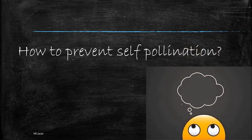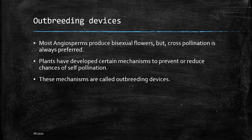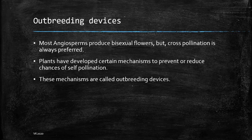Even though we have so many agents of pollination, we still have homogamy — autogamy wherein the plant is pollinating itself. But plants don't really prefer homogamy or autogamy; they need variation to increase their genetic diversity. So plants have developed certain devices known as outbreeding devices, by which they can prevent themselves from being fertilized by their own pollen. Because most angiosperms produce bisexual flowers, they need mechanisms to reduce chances of self-pollination. These mechanisms are called outbreeding devices.